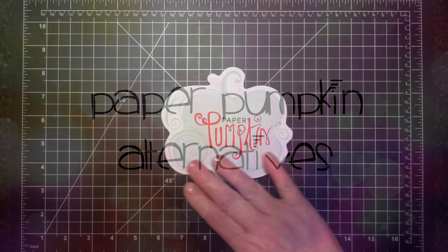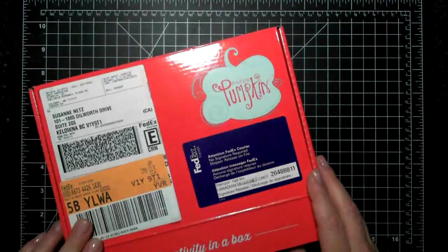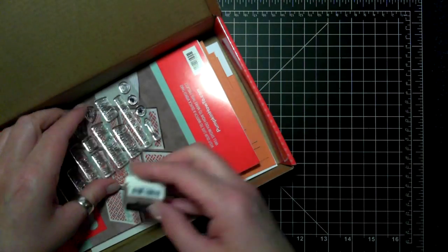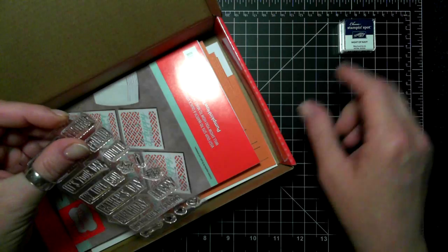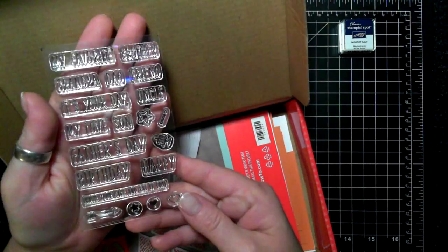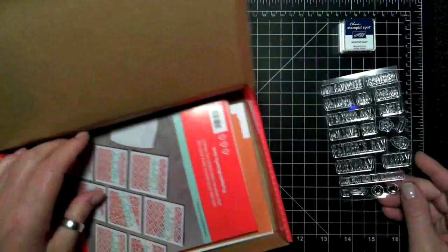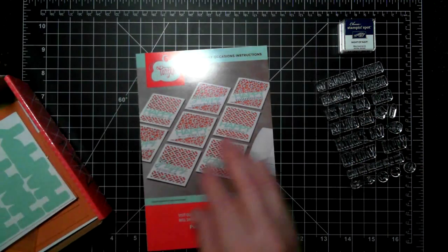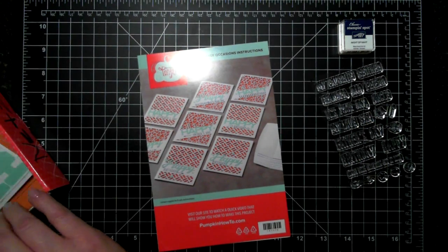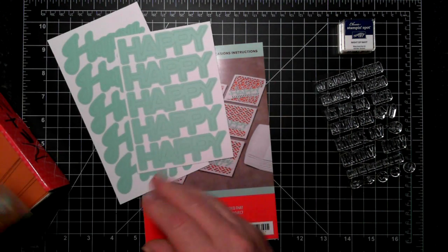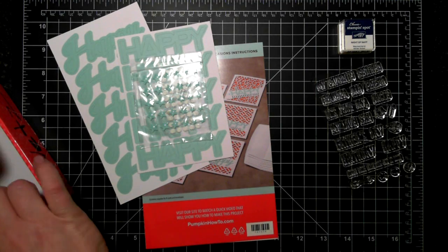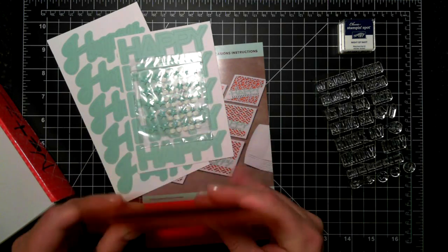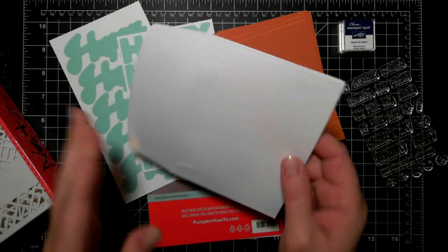Hello everybody, it's Suzanne here. Thanks for joining me for my Paper Pumpkin alternative video. Paper Pumpkin is a box that comes to you once a month. It has an ink spot, a stamp set, instructions, and a whole lot of stuff to make the projects that are dictated in the instructions.